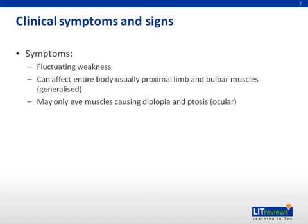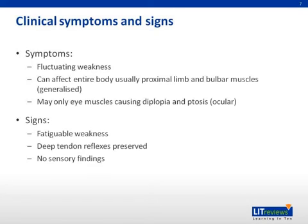The hallmark of MG is the fluctuation of weakness, which may be readily apparent from a patient's history. From the physical examination, the most important sign is to demonstrate fatigable weakness. There will be no impairment of deep tendon reflexes, and sensation is intact. Some patients with mild MG may have normal clinical examination whilst history suggests weakness. In these cases, it is important to rule out a neuromuscular transmission defect such as MG, and try to fatigue the muscle groups with repetitive movement before assessing the power again.